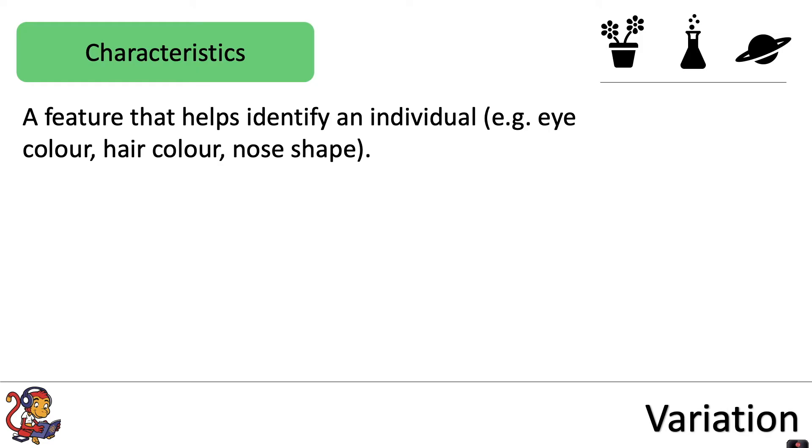In this video about variation, we're going to first look at the word characteristics. A characteristic is a feature that helps identify an individual. For example, it could be eye color, hair color, or nose shape. So all of those are different examples of characteristics.